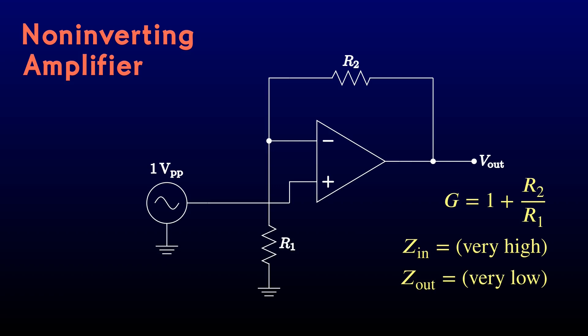You'll quickly learn to recognize it on sight. By the way, a lot of people prefer to write this circuit with the plus input of the op-amp on top, because that avoids one wire crossing. So be careful when you read a schematic to note which way the plus and minus inputs are drawn. I've gotten that backward more than once.